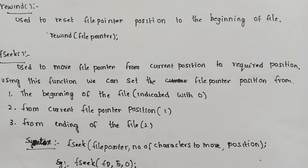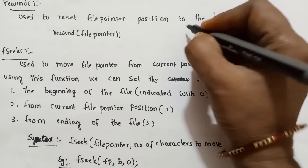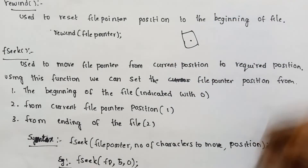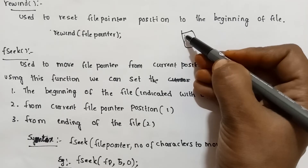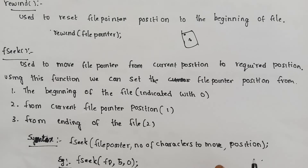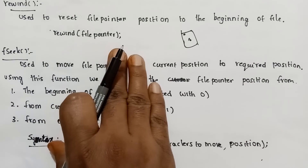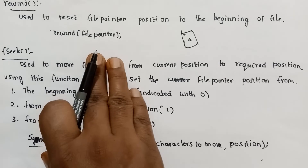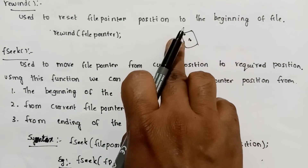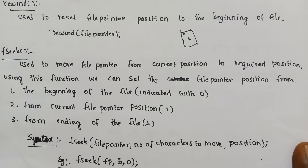The next predefined function used in random access files is rewind. Rewind is used to reset the file pointer position to the beginning of the file. The file pointer, wherever it currently is, will be reset to the beginning. The syntax is: rewind(file_pointer). This resets the cursor position to the start of the file.